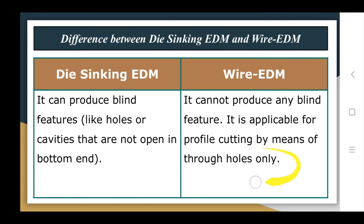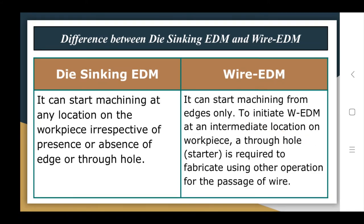Die-sinking EDM can produce blind features like holes or 3D cavities that are not open at the bottom end. Wire EDM cannot produce any blind features; it is applicable for profile cutting by means of through-holes only. Furthermore, die-sinking EDM can start machining at any location on the workpiece irrespective of the presence or absence of an edge or through-hole. Wire EDM can start machining from edges only.